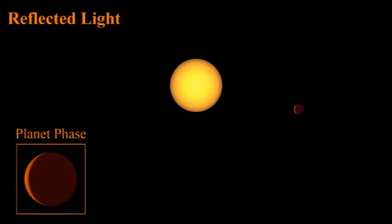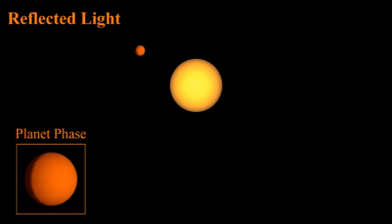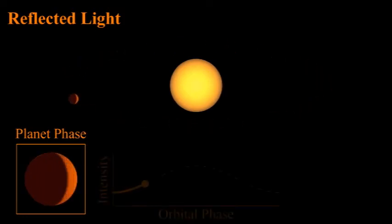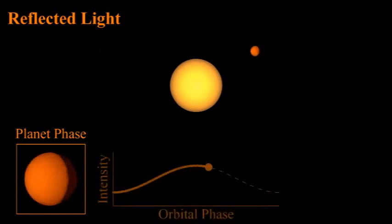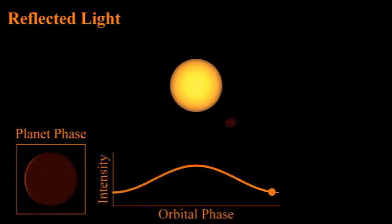Planets reflect light, and hot planets emit thermal radiation. As they orbit the star, they go through phases just like the Moon. In some cases, secondary transits occur as a fully lit planet passes behind the star.